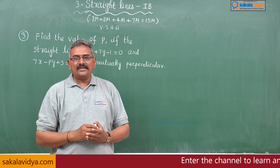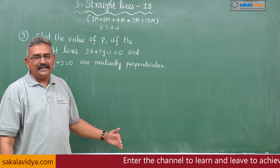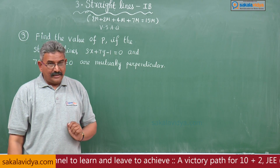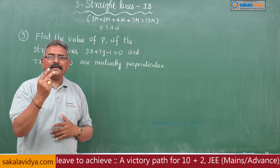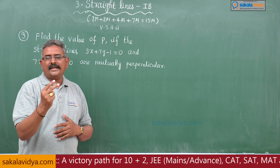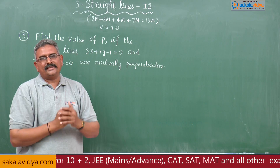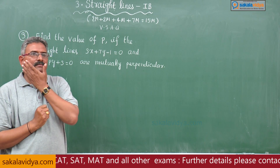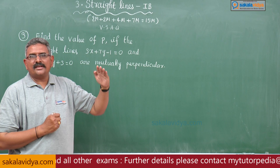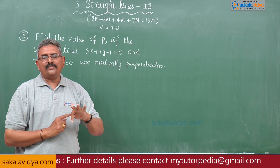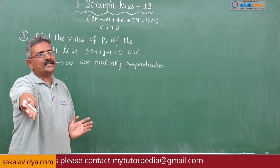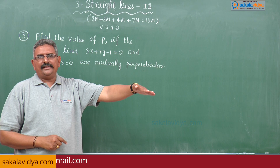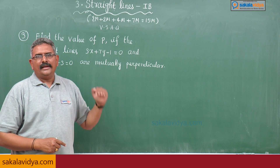Using that formula, slope of the first line M1 and slope of the second line M2 can be determined. After getting M1 and M2, check the condition: since the two lines are mutually perpendicular, the condition is M1 × M2 = -1. So we find M1, find M2, take their product, equate it to -1, and the required P value can be obtained.